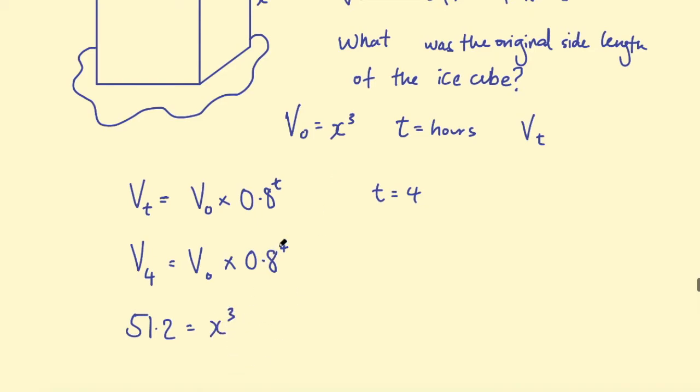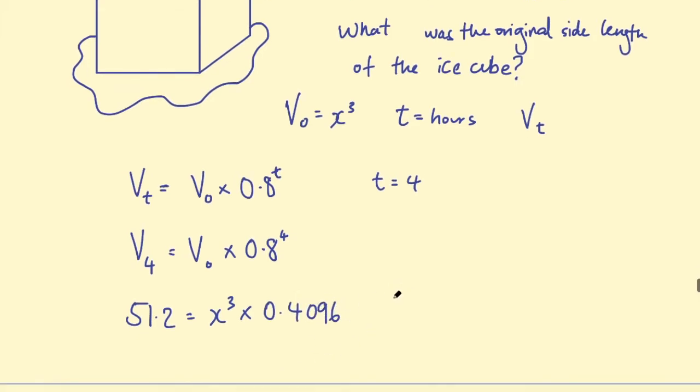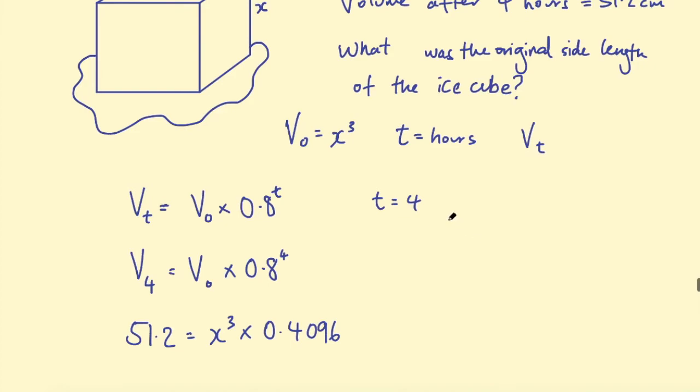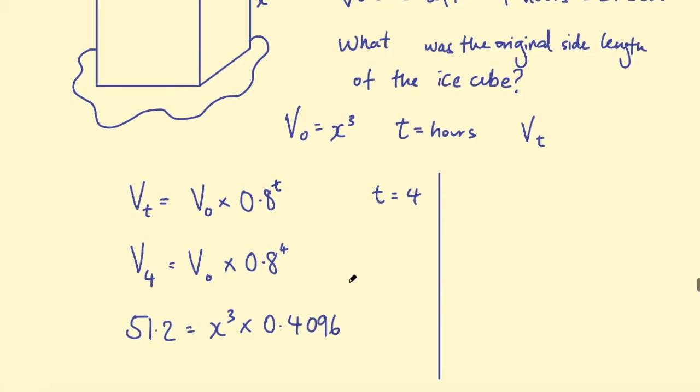And 0.8 to the power of 4, if you put that into a calculator, you get 0.4096. So now we can go ahead and solve this for x using some algebra. We can divide the left hand side by 0.4096. So x³ is going to equal 51.2 divided by 0.4096.